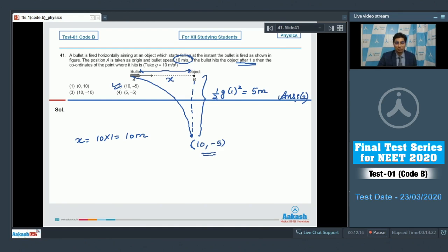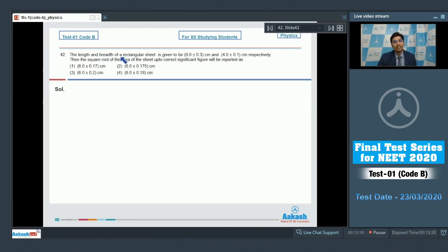Now let us proceed to question number 42. Question 42 says that length and breadth of a rectangular sheet are given as these two quantities: 9 plus minus 0.3 centimeter and 4 plus minus 0.1 centimeter respectively. Then the square root of area of the sheet up to the correct significant figure will be...